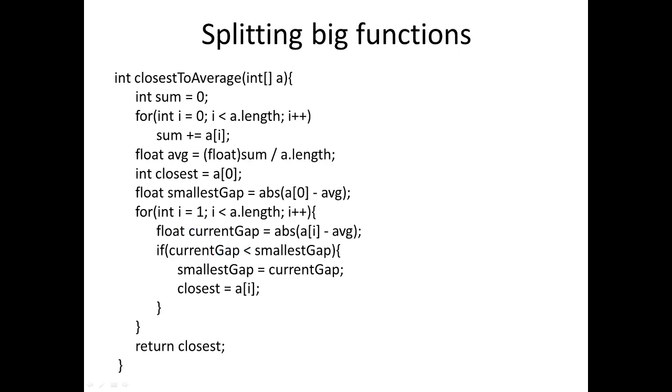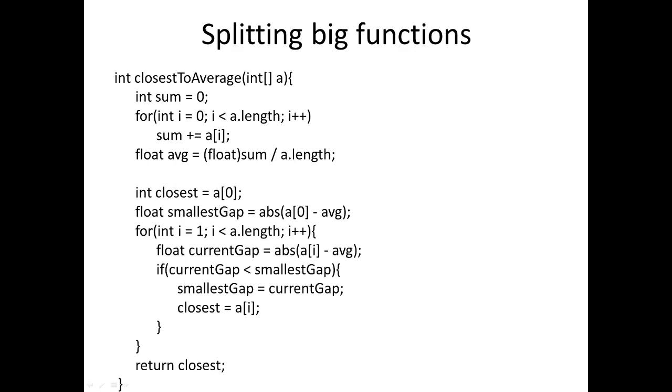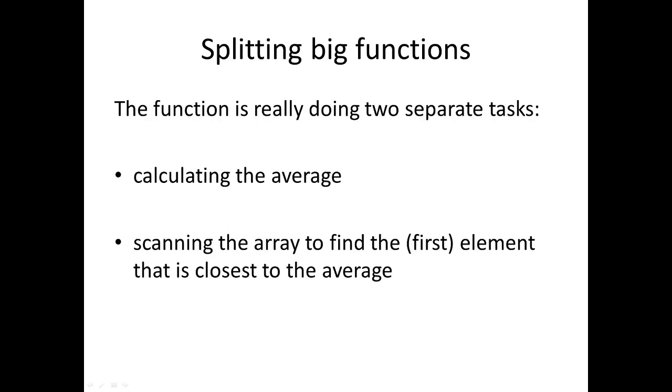Here's a bigger function here and really what we were trying to do with a function always is get it to do a single thing. And if we look closely at this, this is actually doing two things. We split the function with a sort of empty line in the middle there. We can see that the first part is working out the average of an array and the second part, maybe not all that obvious, but it's trying to find the element in the array that's closest to that average.